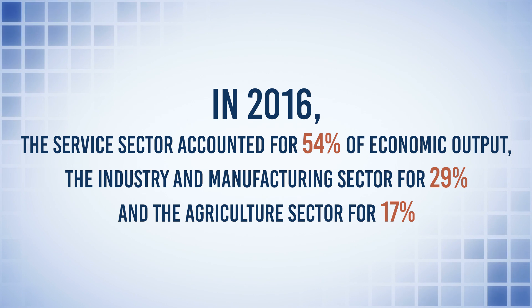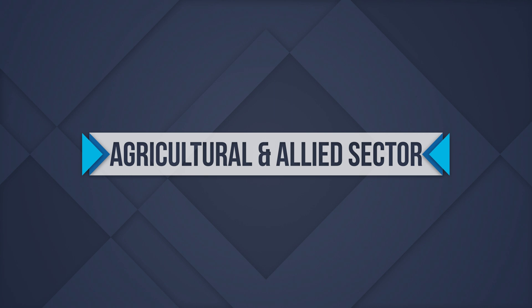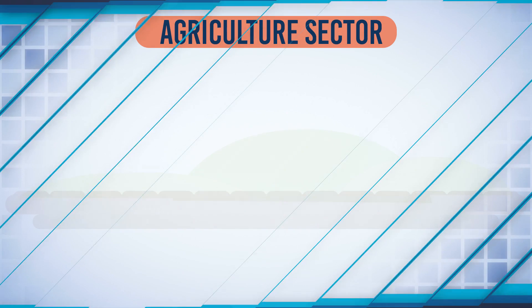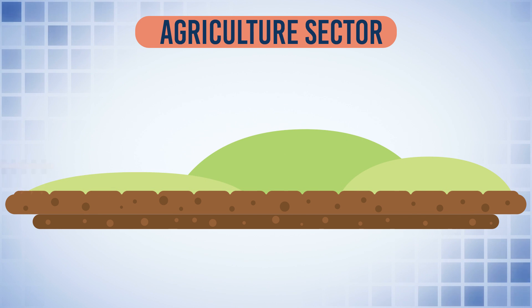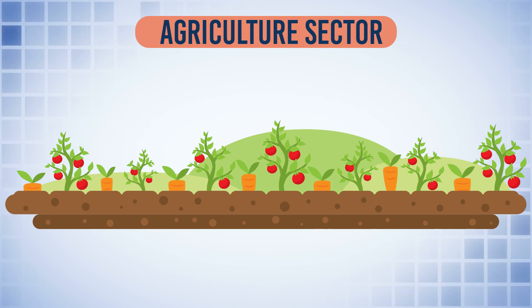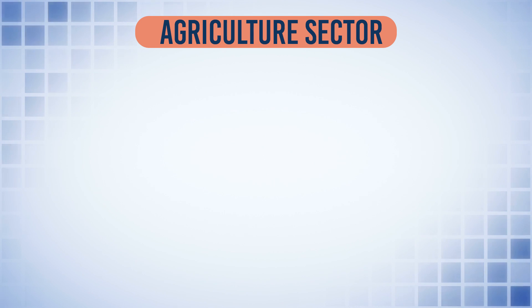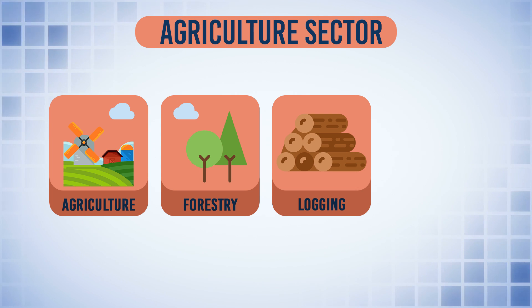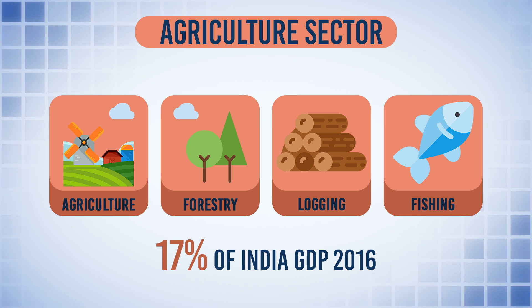The industry and manufacturing sector accounted for 29% and the agricultural sector for 17% of India's GDP in 2016. The agricultural sector is directly dependent on the environment for manufacture and production. In this sector, raw materials are extracted from the earth, and it includes activities leading to the production of goods by exploitation of natural resources. Agricultural sector includes agriculture, forestry and logging, fishing and related activities, accounting for 17% of India's GDP.